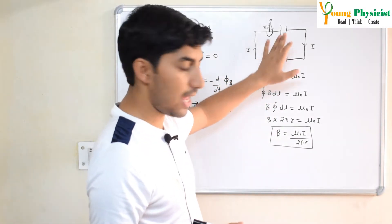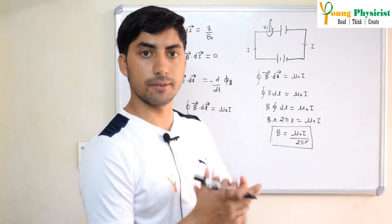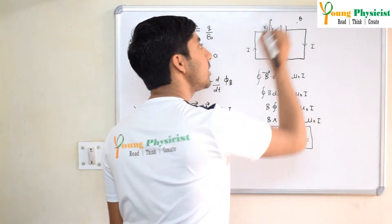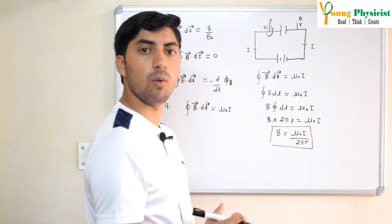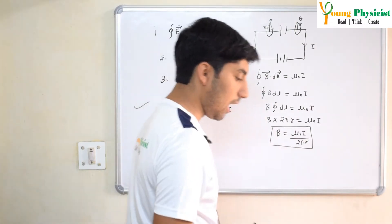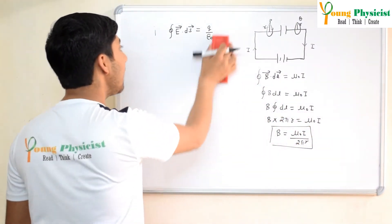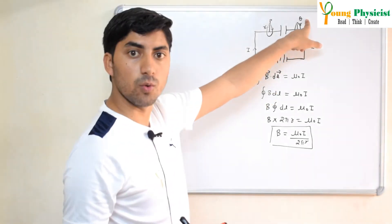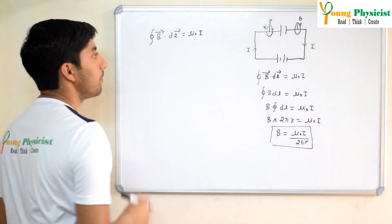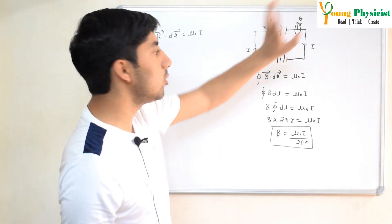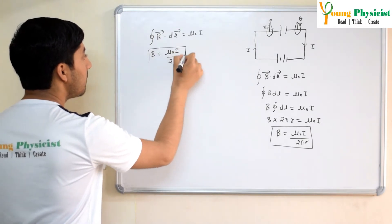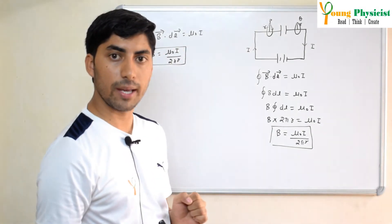Now let's calculate the magnetic field to the right side of the capacitor at a point Q, also at perpendicular distance r from the wire. Applying Ampere's Circuital Law again with the same loop radius r: the current is the same, the radius is the same, so the magnetic field at Q is exactly equal to μ₀i / 2πr — the same magnetic field as at point P.